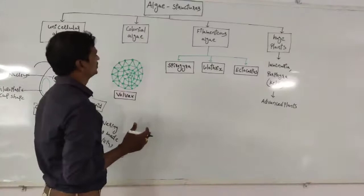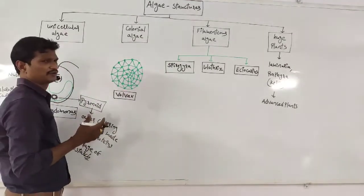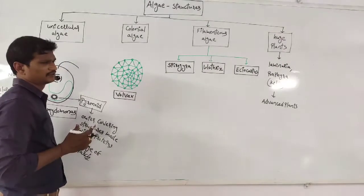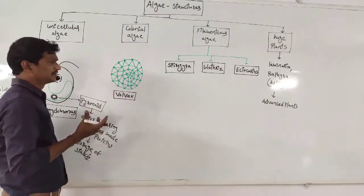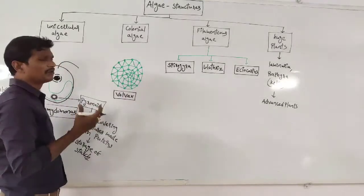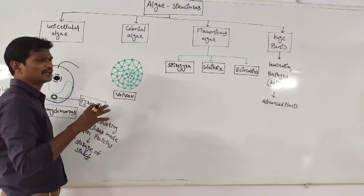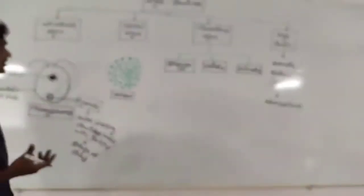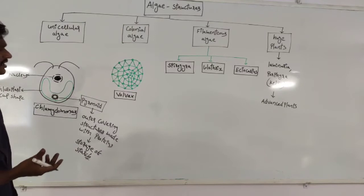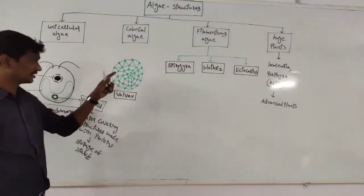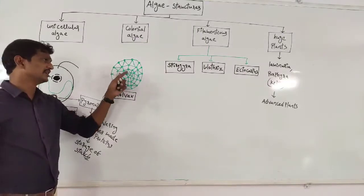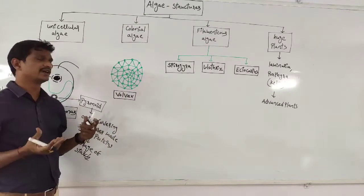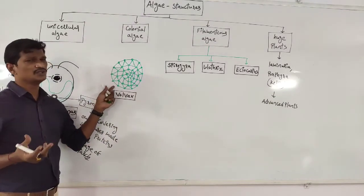Next is colonial algae, which forms colonial structures. Volvox is the best example — Volvox has a round shape. Within it, a group of cells forms colonial structures. Many cells are involved, which are combined and joined to form the colony. That is the colonial algae.